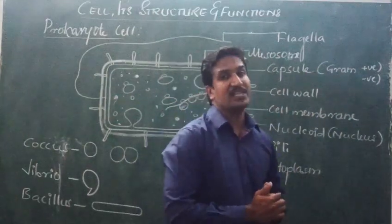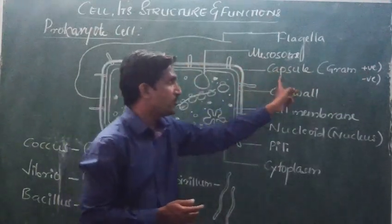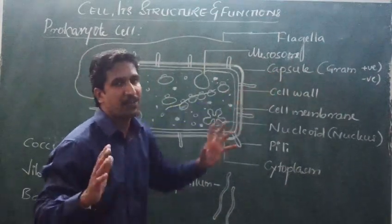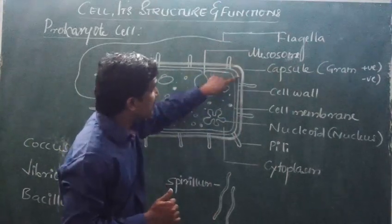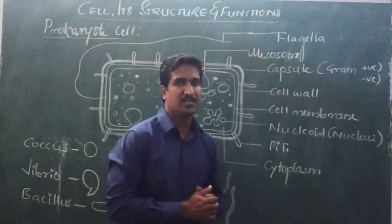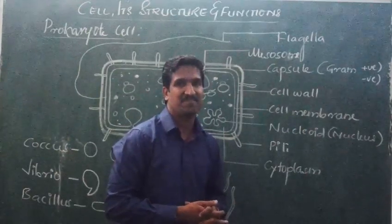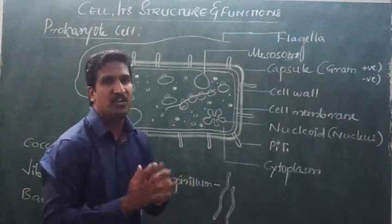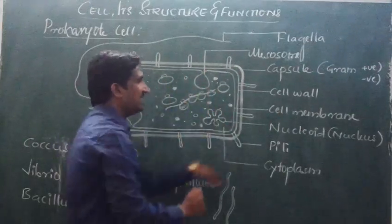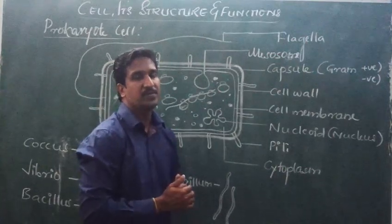Name the bacteria classified on the basis of gram stain: gram positive and gram negative. If gram positive, there is no capsule. Below that, there is the presence of cell wall. A thin membrane is present called the cell membrane.